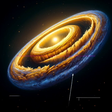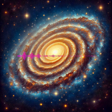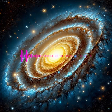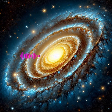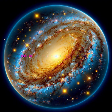Hoag's Object. This galaxy is famous for its almost perfect ring of young blue stars circling an older yellow core, with no visible connection between them. The mysterious origins of Hoag's Object's structure push astronomers to explore new theories of galactic dynamics and the possible processes that can lead to such sharply defined galactic features.